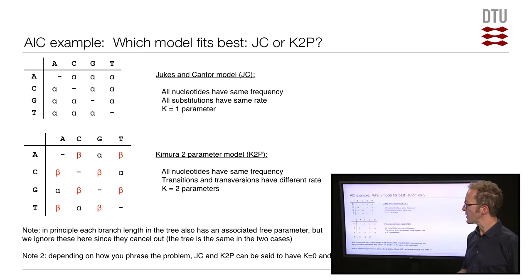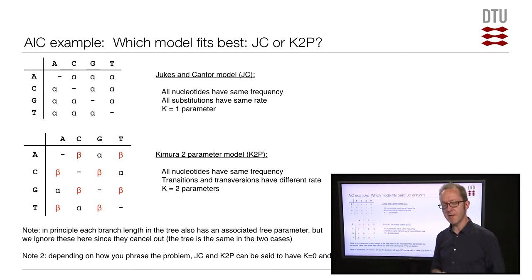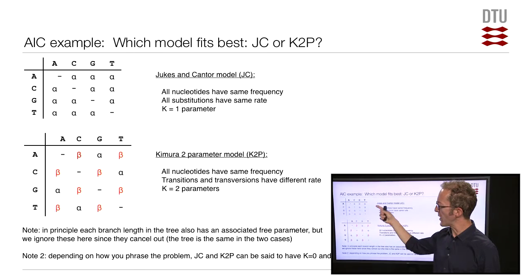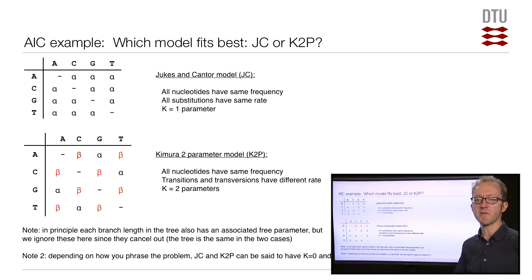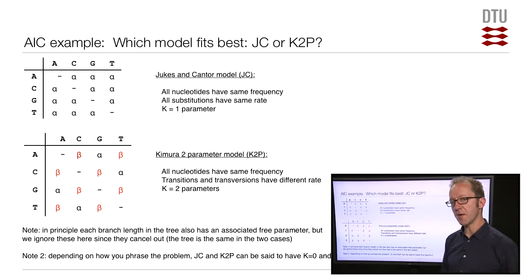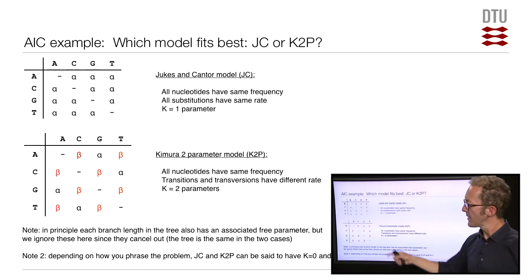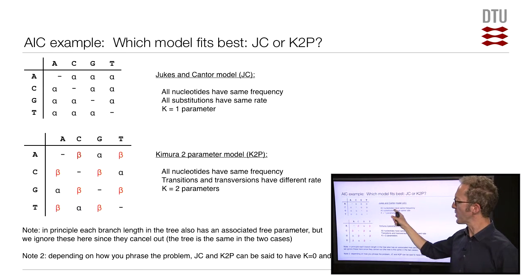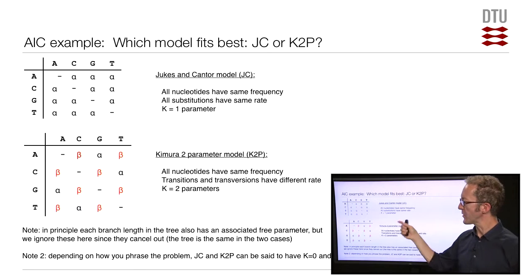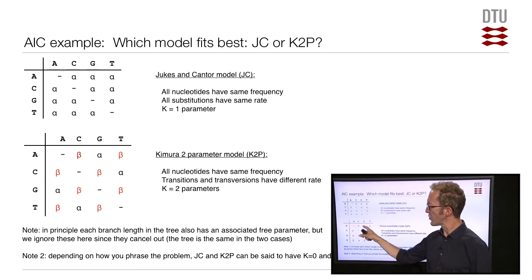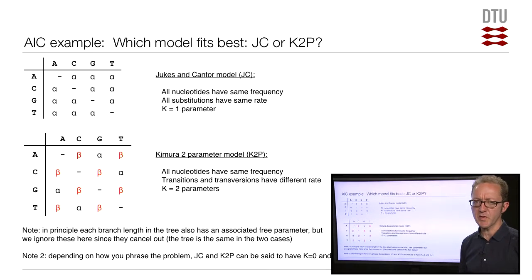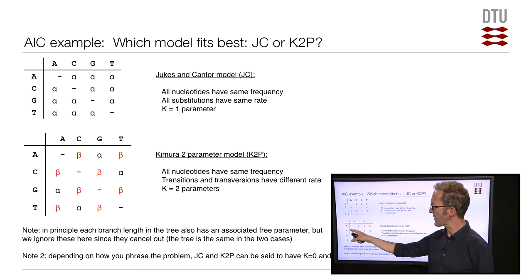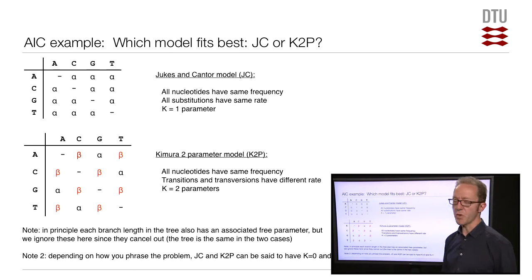Let's take a concrete example. Suppose we have a DNA alignment and we're considering which of two hypotheses best describes how the sequences have been evolving. One hypothesis is the Jukes-Cantor model, where all substitution rates are the same and all nucleotides have the same frequency — this model has one free parameter, the substitution rate. The alternative is the Kimura 2-parameter (K2P) model, which has two different substitution rates — transitions and transversions — and also assumes equal nucleotide frequencies. This model has two free parameters, one more than Jukes-Cantor.